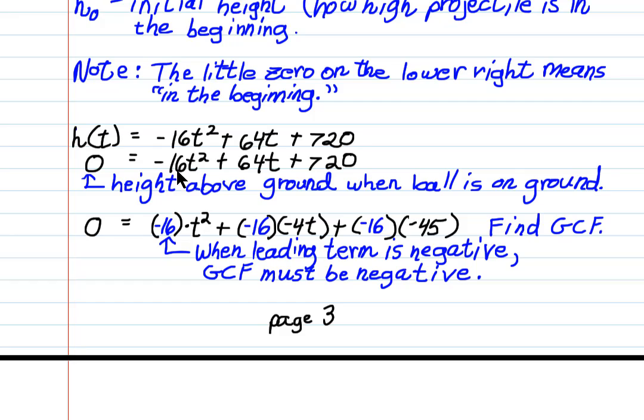Sixteen is the greatest common value of these three terms. But, there's another rule. When the leading term, the leading coefficient, is negative, then your GCF must be negative, which is why I'm about to do what I'm about to do, which is this.